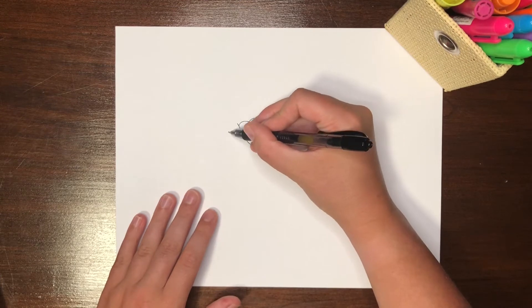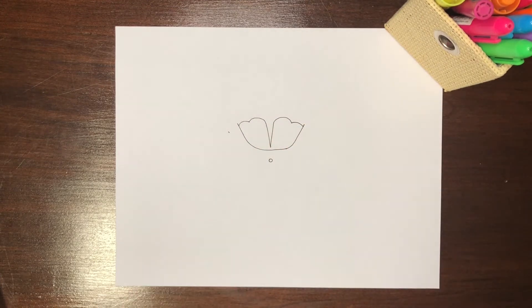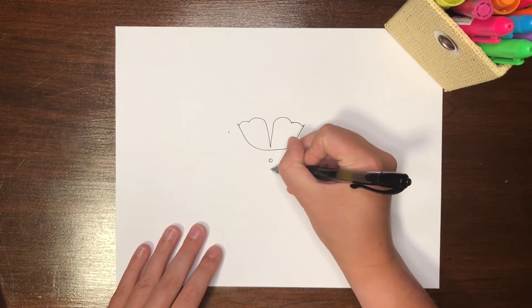Here, we will leave a gap to allow the entrance of our dorsal root, which is continuous with the gray matter of the dorsal horn.